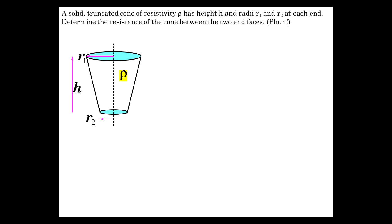Sounds like a lot of fun, doesn't it? Well, it would be so easy if we only had a constant radius. R equals rho L over A. We start with that.